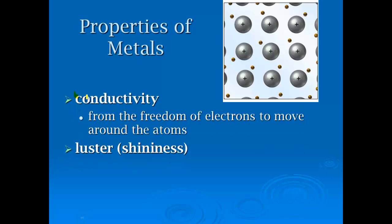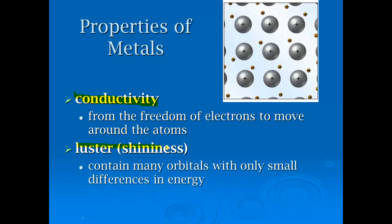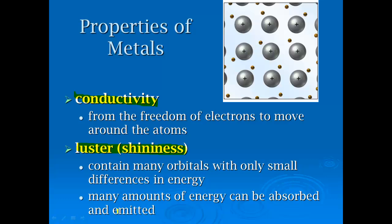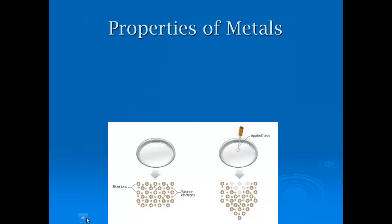Properties of metals: conductivity comes from the freedom of these electrons to move around the atoms — if those electrons couldn't move, they would not conduct electricity. Shininess or luster comes from the fact that you have all these orbitals with small differences in energy. Every time an electron comes down an energy level, it emits a photon of light, and all those little photons of light add up to metals being shiny.